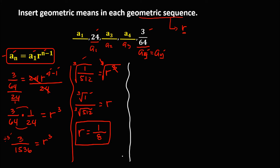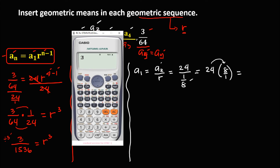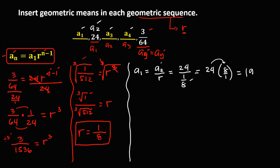To solve for a sub 1, since the given is a sub 2, we divide a sub 2 by the common ratio. So a sub 1 equals a sub 2 over R: that's 24 over (1/8). We rewrite this as 24 times the reciprocal of 1/8, which is 8 over 1. So 24 times 8 equals 192. Therefore a sub 1 is 192.